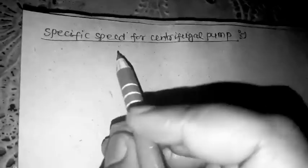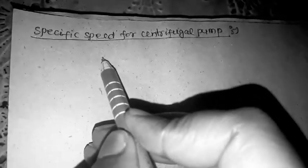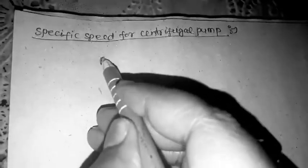We know that in the case of power, the power of the system depends on the relation to the power of the head. N is equal to N under root P upon H to power 5 by 4. This is the expression for power of the centrifugal pump.